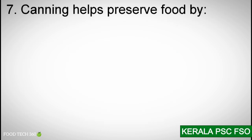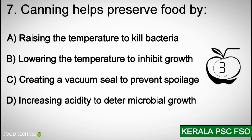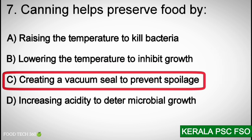Question number 7: Canning helps preserve food by — A. Raising the temperature to kill bacteria, B. Lowering the temperature to inhibit growth, C. Creating a vacuum seal to prevent spoilage, D. Increasing acidity to prevent microbial growth. Correct answer: C. Creating a vacuum seal to prevent spoilage.